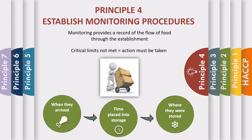Principle 4: Establish monitoring procedures. Monitoring is a plan which includes observations or measurements to assess whether the critical control point is being met. It provides a record of the flow of food through the establishment. If monitoring indicates that the critical control points are not being met, then an action must be taken to bring the process back into control. The monitoring system should be easy to use and meet the needs of both the food establishment and the regulatory authority. The job of monitoring must be assigned to a specific individual who is trained on the monitoring technique.